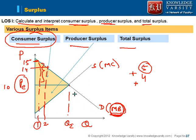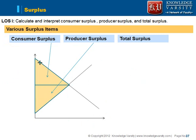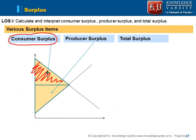Since our demand curve and supply curve are continuous, we will not try to find out item by item. In continuous cases, we will go by the area. This total area will give us the consumer surplus.